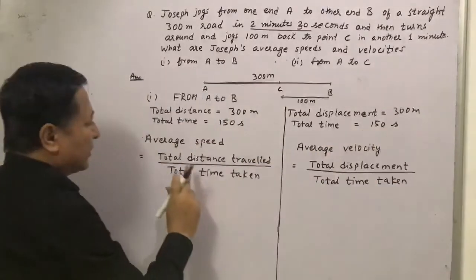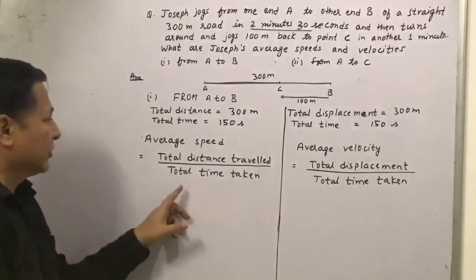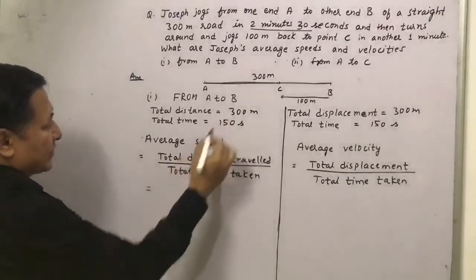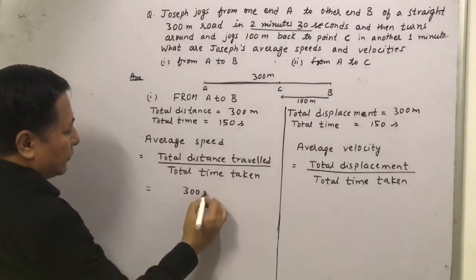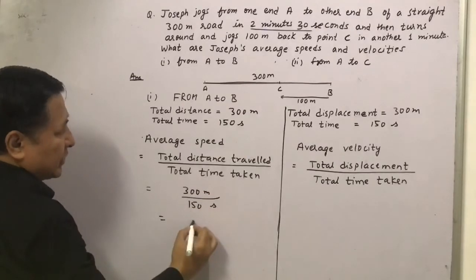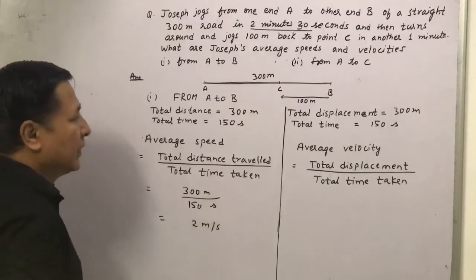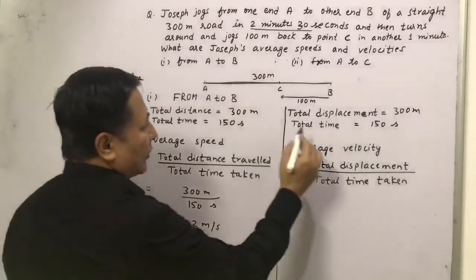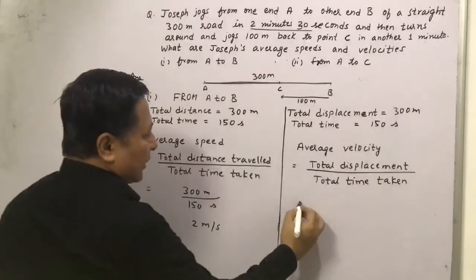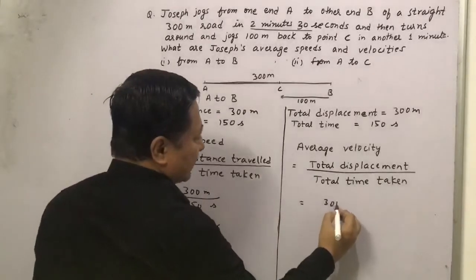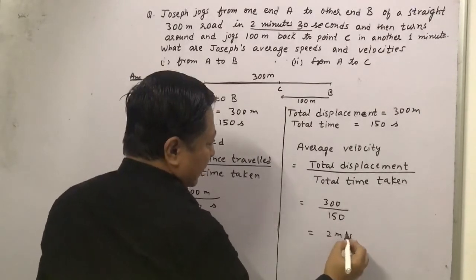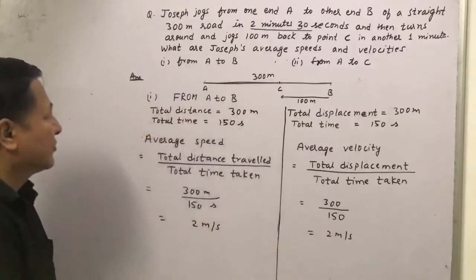We have to find the average speed and average velocity. The formula is total distance travelled divided by total time taken. Total distance is 300m and total time is 150 seconds, so the average speed is 2 m/s. For average velocity, total displacement divided by total time taken equals 300 divided by 150, which is also 2 m/s.